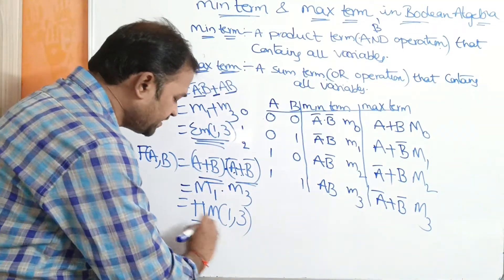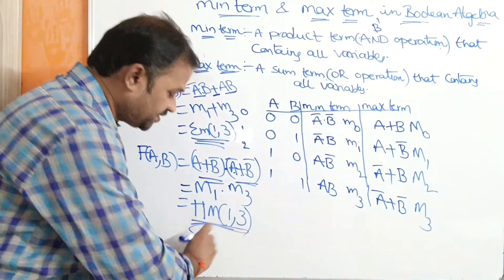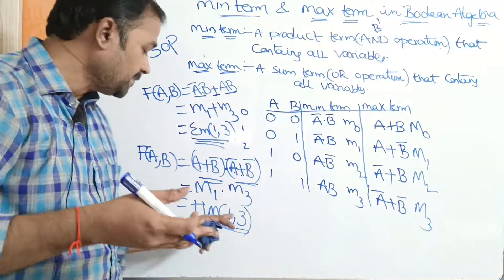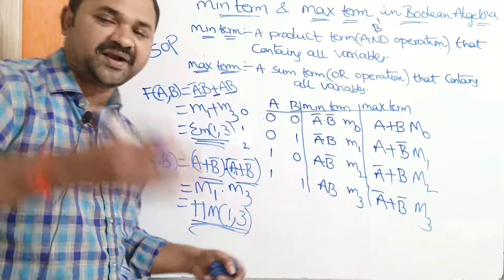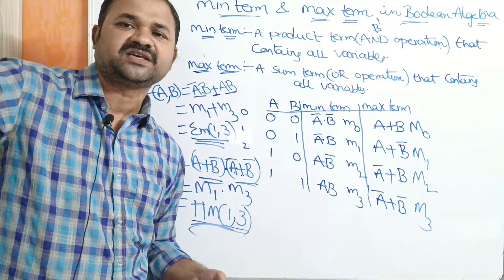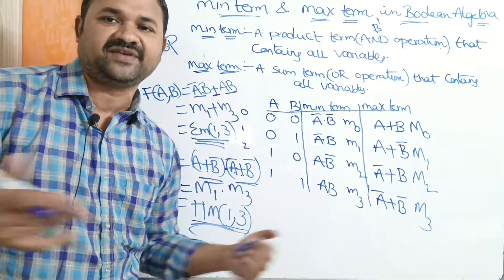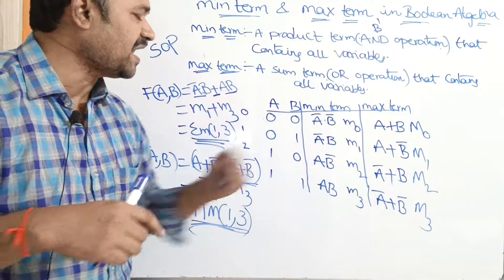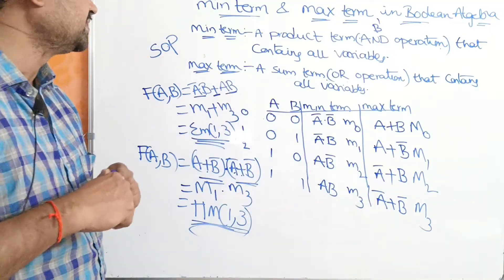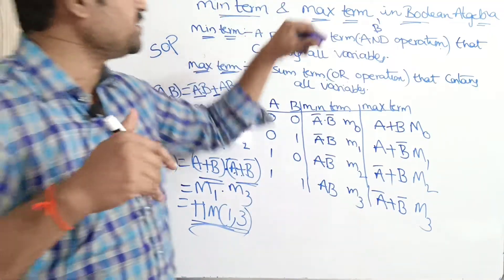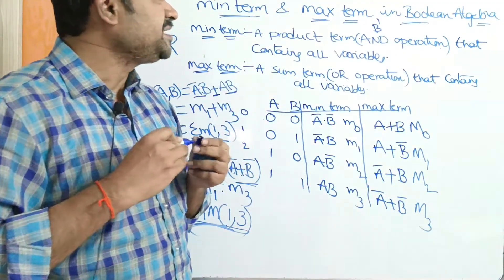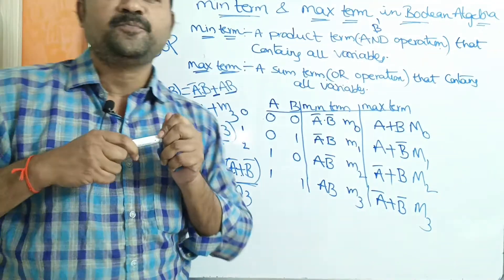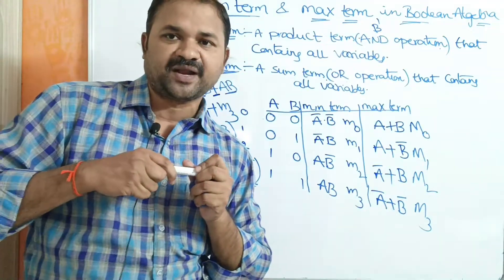In an examination, they may give a question such as: simplify the expression πM(1,5,7,8). According to that, we have to simplify it. So this is about minterm and maxterm in Boolean algebra.